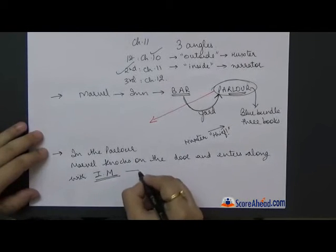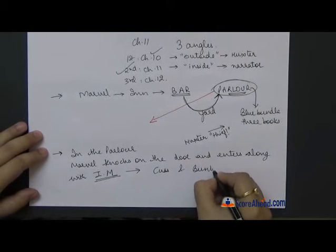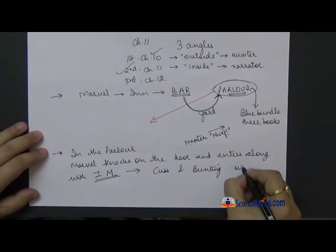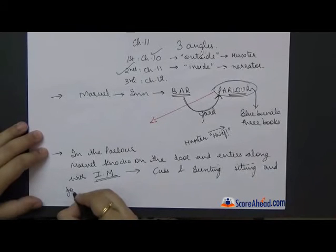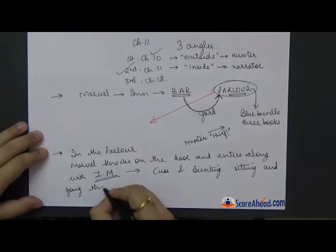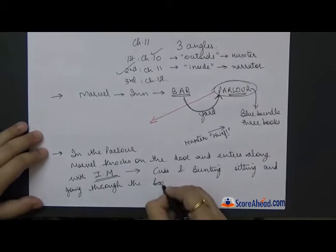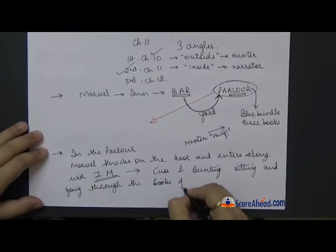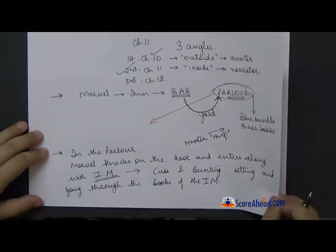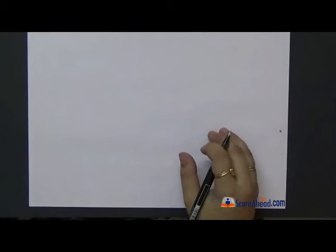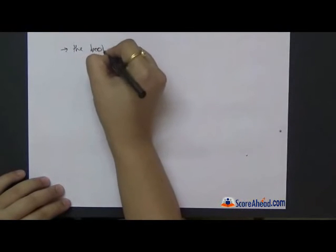Our chapter number 11 will take us to the parlor again. In the parlor, Marvel knocks on the door and enters. But do you think he has entered alone? No, he has entered along with the invisible man whose work he has come to do right now into the parlor. He enters and whom do they find there? They find Kuss and Bunting sitting and going through the books of the invisible man.